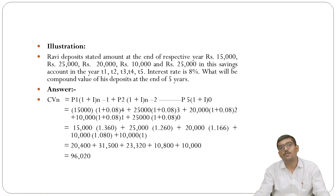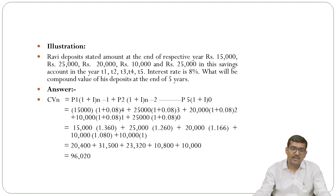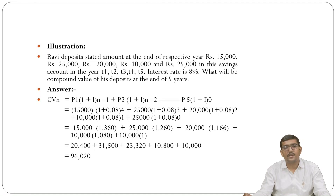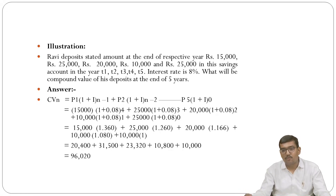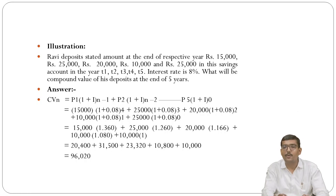What will be the compounded value of Ravi's deposits at the end of the fifth year? CV = P₁(1+i)^(n-1) + P₂(1+i)^(n-2) + … = 15,000 × (1.08)^4 + 25,000 × (1.08)^3 + 20,000 × (1.08)^2 + 10,000 × (1.08)^1 + 25,000 × (1.08)^0. The total answer is ₹96,020. Just apply the formula, substitute the values, and you get the answer.